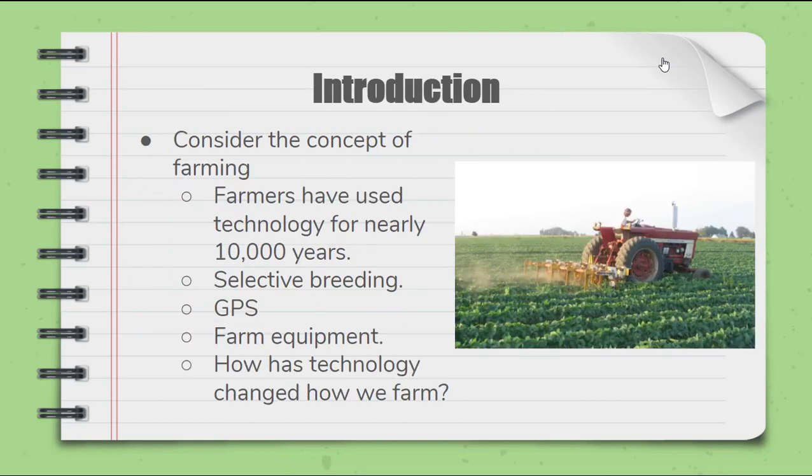So let's talk about just a little bit of an introduction here. Let's consider the concept of farming. Now farmers have used technology for nearly 10,000 years. You have to think back to when they were using ox and horses to plow the fields, planting the seeds manually, and then through the course of time, science and technology developed and we developed new ways to become more efficient at the farming process. That includes things like selective breeding, breeding cattle for their size or breeding different stalks of corn for the amount of yield that is produced from farming.